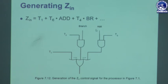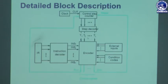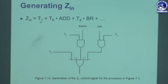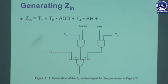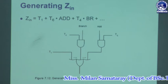The Zin signal is activated during time slot T1 for all instructions, and during time slot T6 for an add instruction. For the unconditional branch instruction, the time slot is provided by the step decoder circuit as T4 — that means in the fourth time slot the unconditional branch instruction has to be executed.